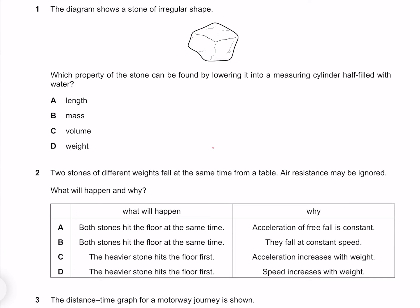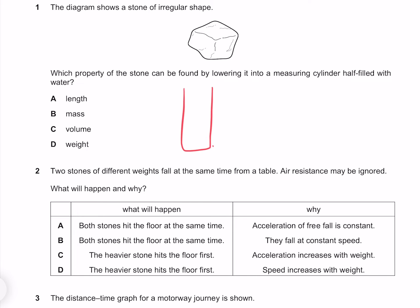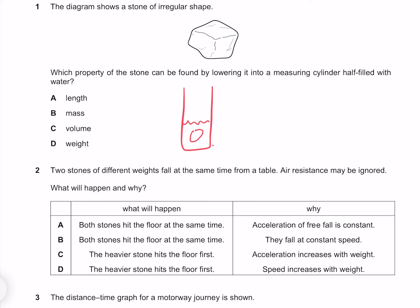The diagram shows a stone of irregular shape. Which property of the stone can be found by lowering it into a measuring cylinder half filled with water? When we submerse our stone, our water level is going to rise. The difference in our volume readings is going to indicate the volume of the rock. So our answer is volume.